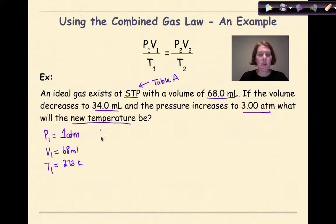My P2 here is listed at 3 atmospheres. My V2 is listed as 34 milliliters. And I'm solving for the new temperature. So I'm solving for T2. This is going to be technically my X, my variable that I'm looking for. Now I'm going to take the information that is given to me, and I'm going to plug it into this formula up here.